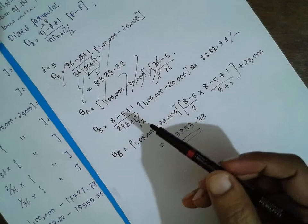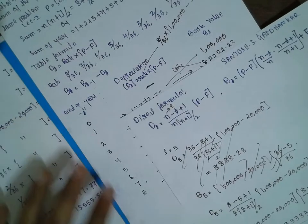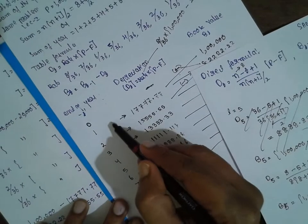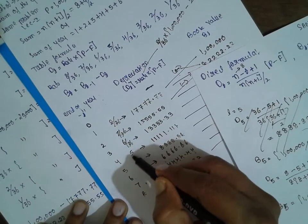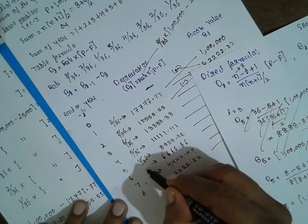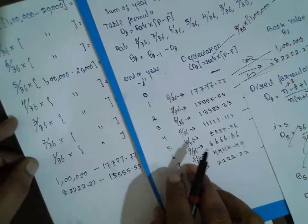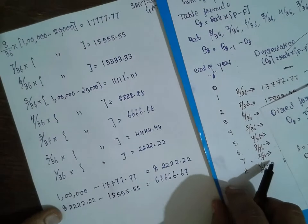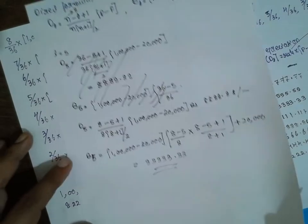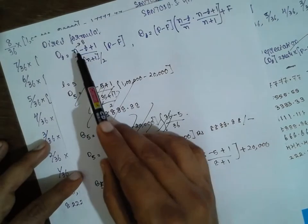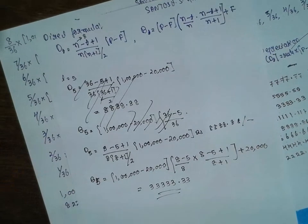Either the formula method or the table method will give the same answer. While doing the table, be careful to use the rates in the correct order: 8/36, 7/36, 6/36, 5/36, 4/36, 3/36, 2/36, and 1/36. These are the two formulas required for the Sum of the Year Digit method of depreciation. Thank you very much for listening.